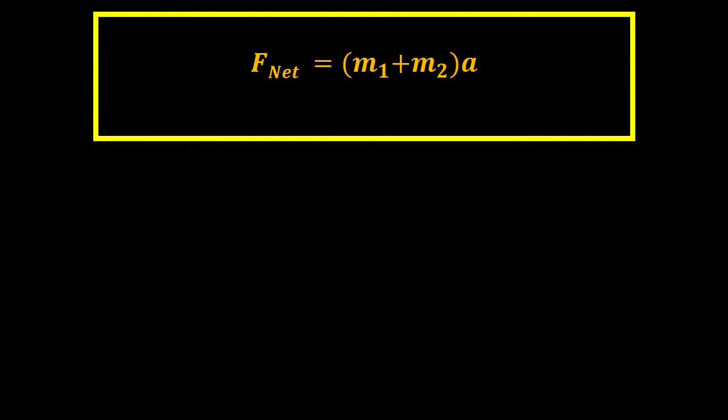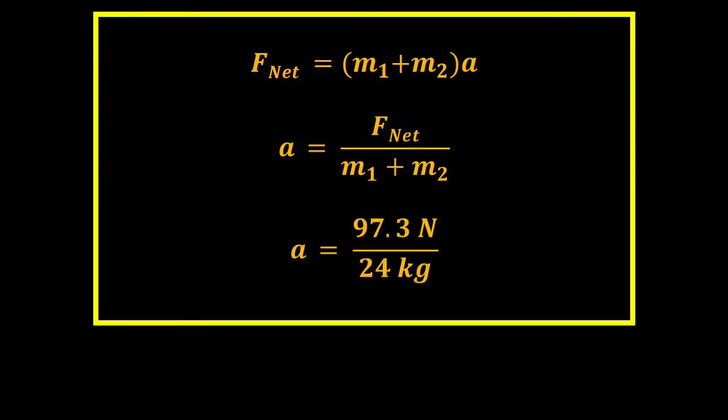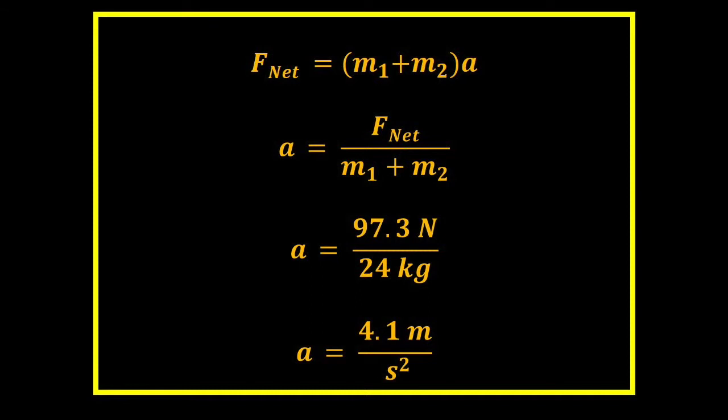So the net force of the system is going to be that much. The net force is going to equal the two masses, so the acceleration is going to be the net force divided by the sum of the two masses, because remember, it's the masses that are accelerating, both masses together, and that's going to be equal to 4.1 meters per second squared. Okay, let's take a quick break, and we'll come back.